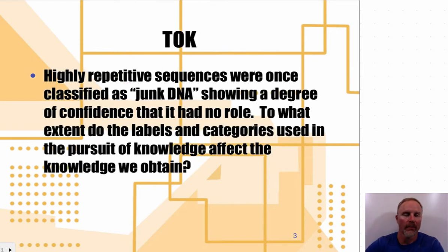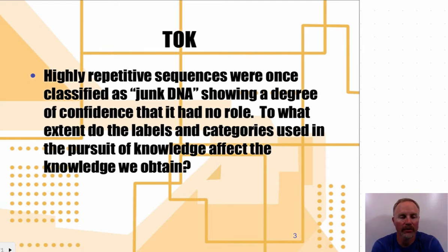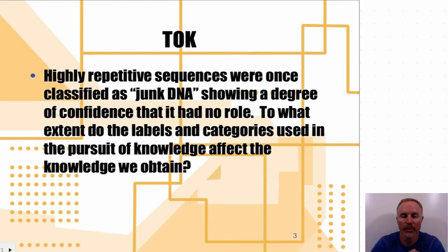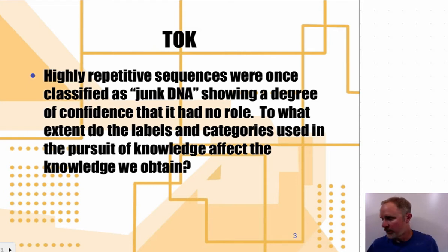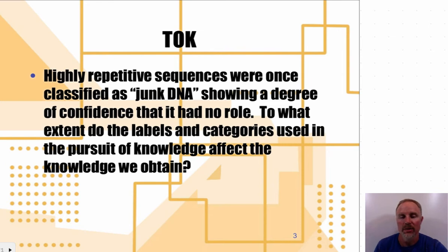From a TOK standpoint, highly repetitive sequences were once classified as junk DNA, showing a degree of confidence that they had no role. To what extent did the labels and categories used in the pursuit of knowledge affect the knowledge we obtain? Take a second, construct an answer, and then we'll go over it in class.